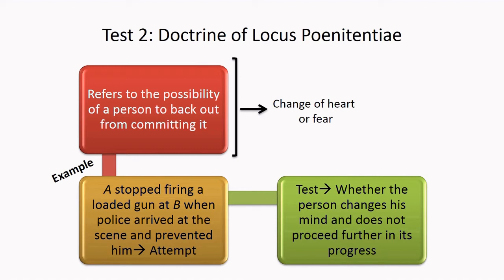But once he has moved past that stage and aims at the person but is stopped by some external agency, he will not be in the preparatory stage — he has moved on to the attempt stage. The key test is whether the person changes his mind and does not proceed further of his own accord, which is what we consider while applying this doctrine.